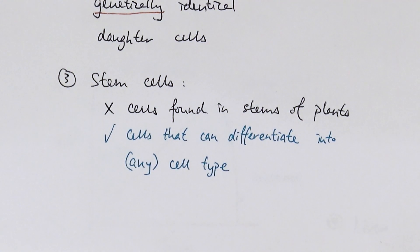But the key thing is that they have the ability to differentiate or specialize into other cell types such as red blood cells, white blood cells, or muscle cells, neurons, etc. So they're not found in the stems of plants, simply like that, but you can find them in animals and plants and that's what it is.